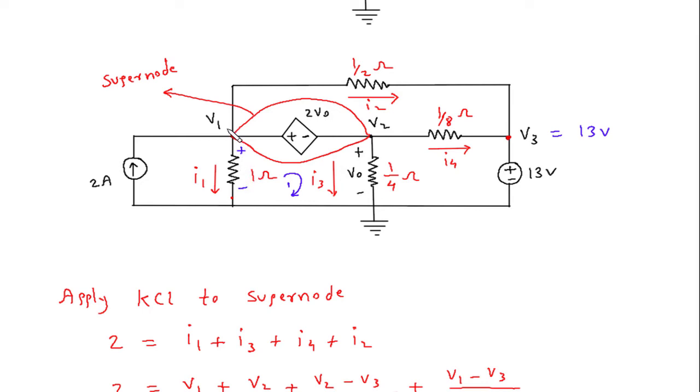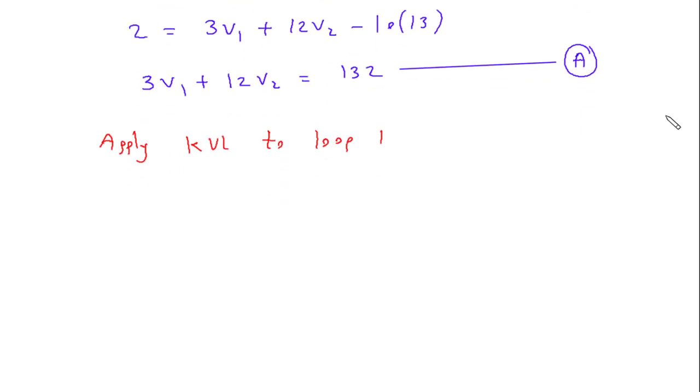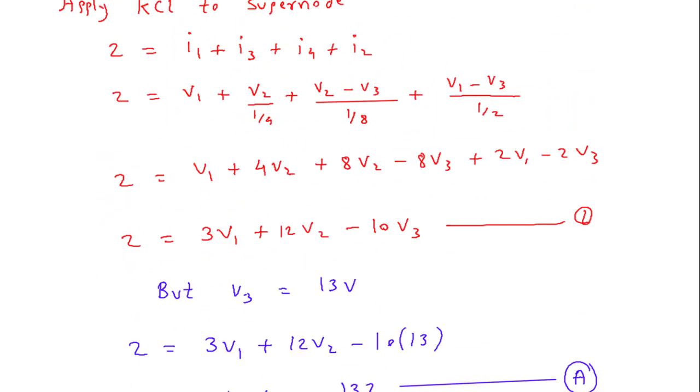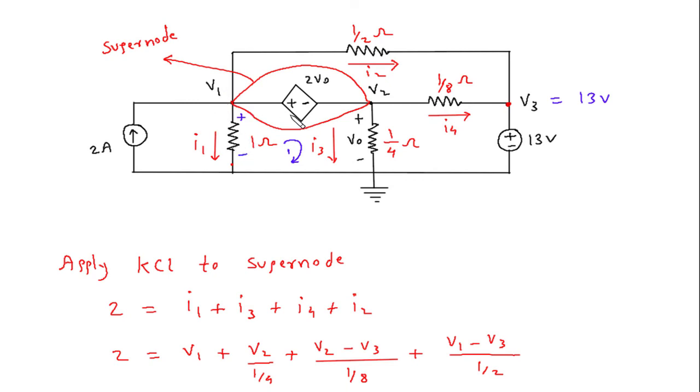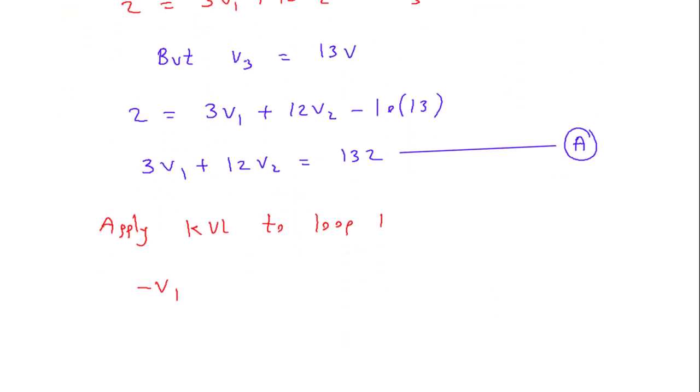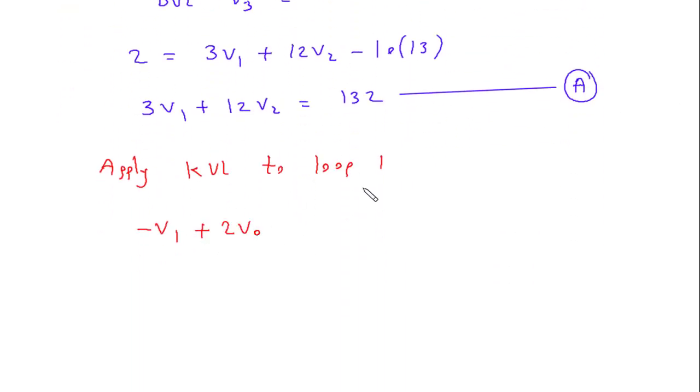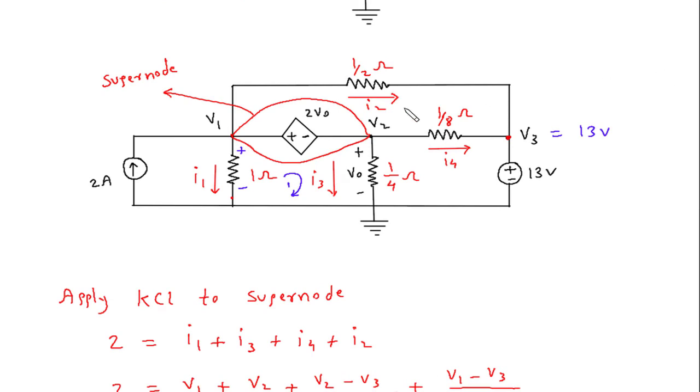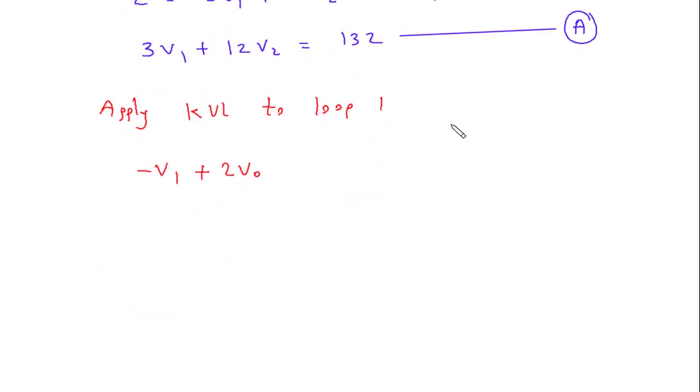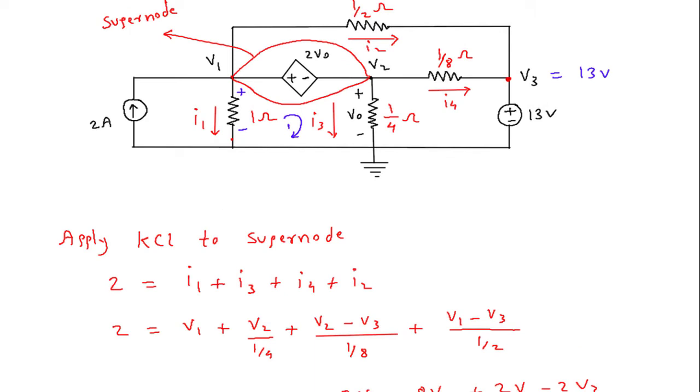Now let's start from this point. The voltage across this 1 ohm will be V1 and the voltage across this 1 by 4 ohm will be 2 volts. So minus V1, then plus 2Vo, plus Vo is equal to 0.